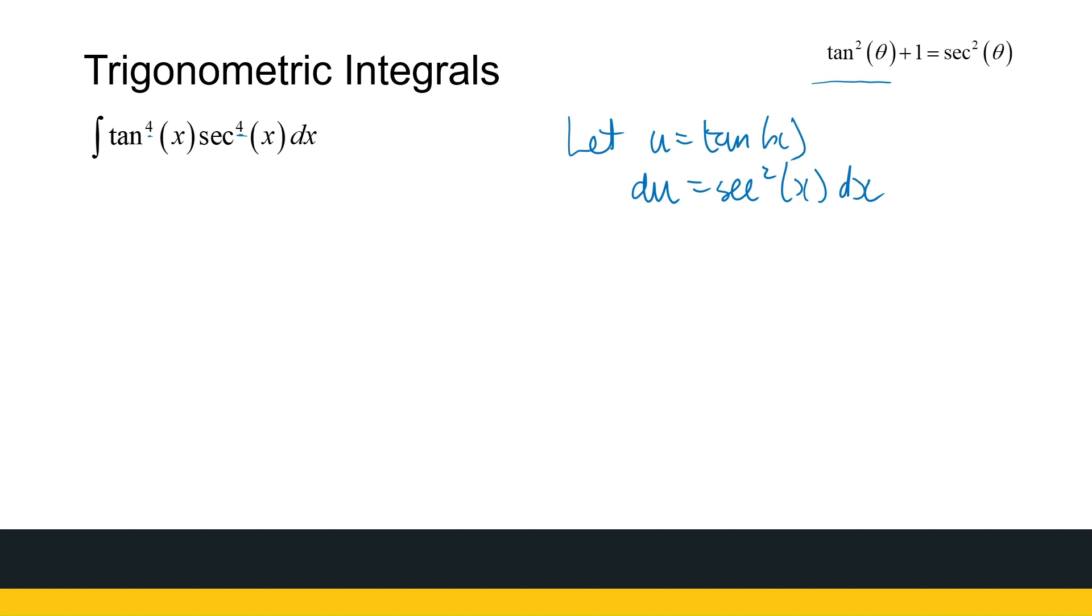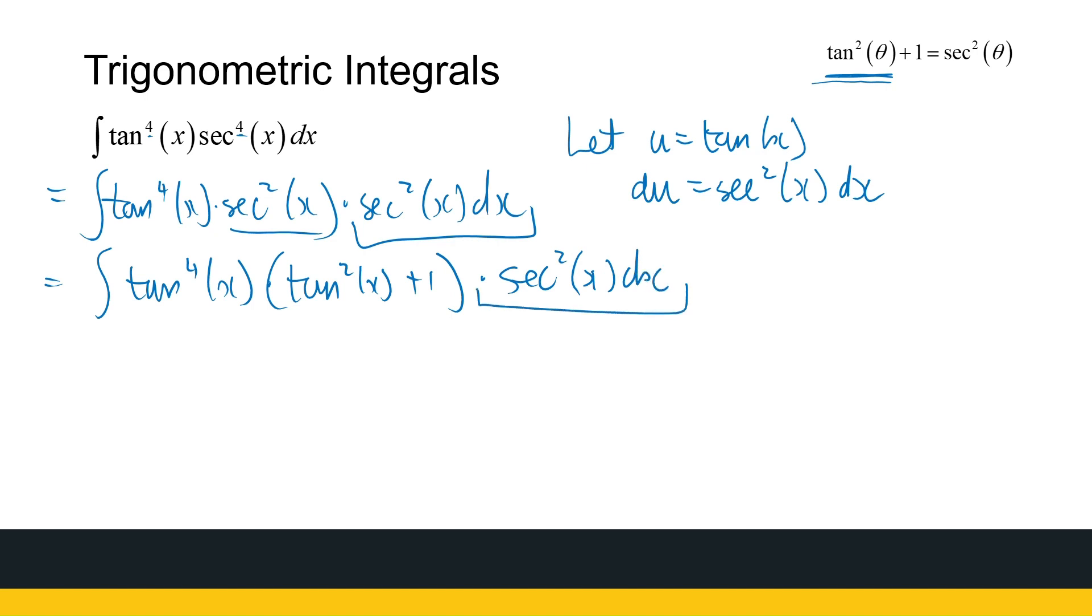Let me rewrite this as tan⁴(x) times sec²(x), which I can change to tan(x) with the identity at the top there, times sec²(x)dx, which will be swallowed up with du. So that's the integral of tan⁴(x) times, now sec²(x) is tan²(x) plus 1, and I'm keeping that sec²(x)dx separate because that's going to be du. So now I can change to u: that's the integral of u⁴ times (u² + 1)du.